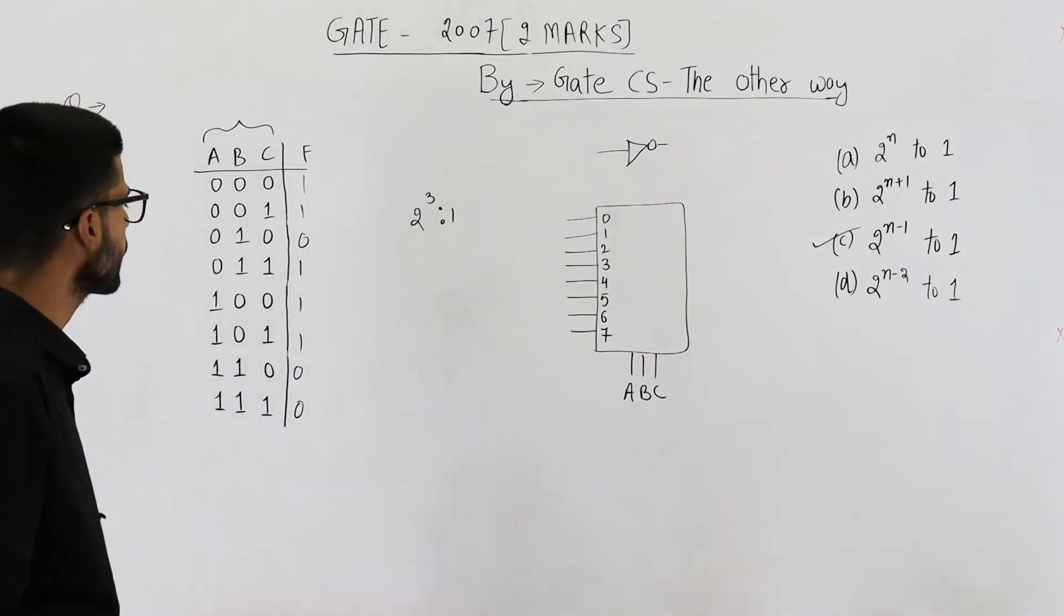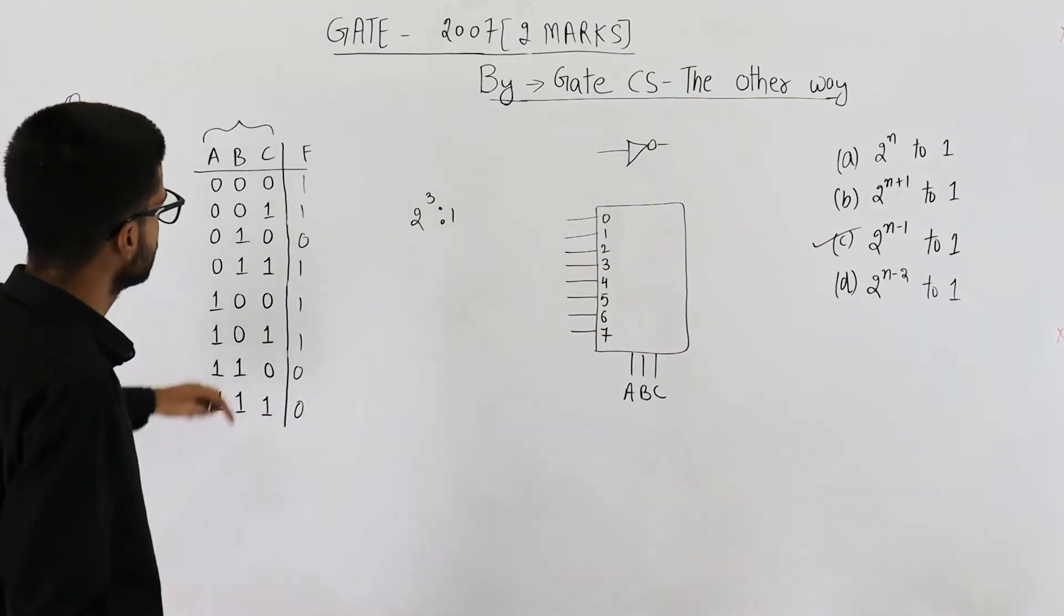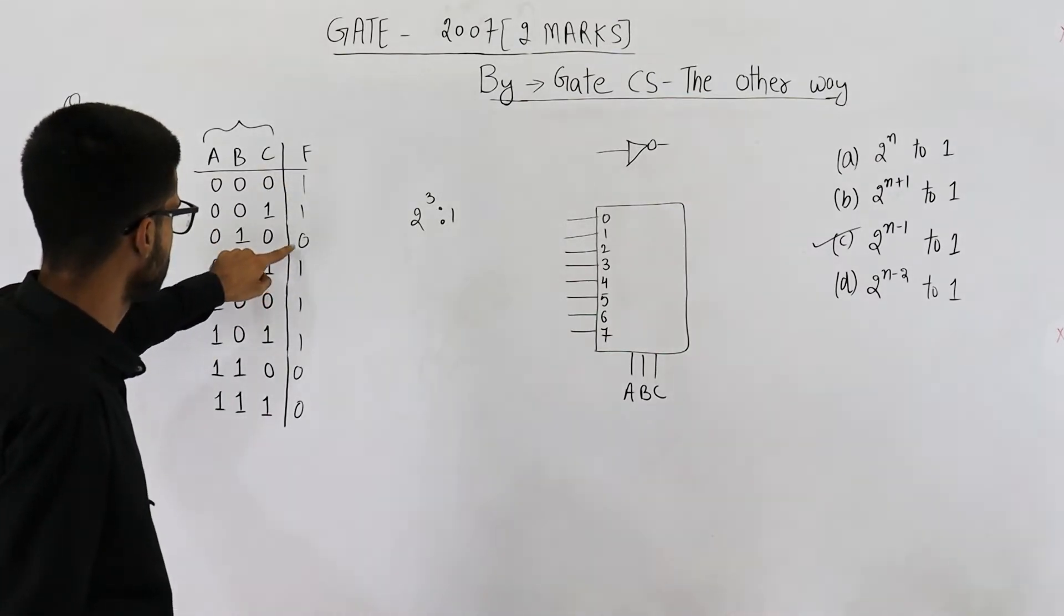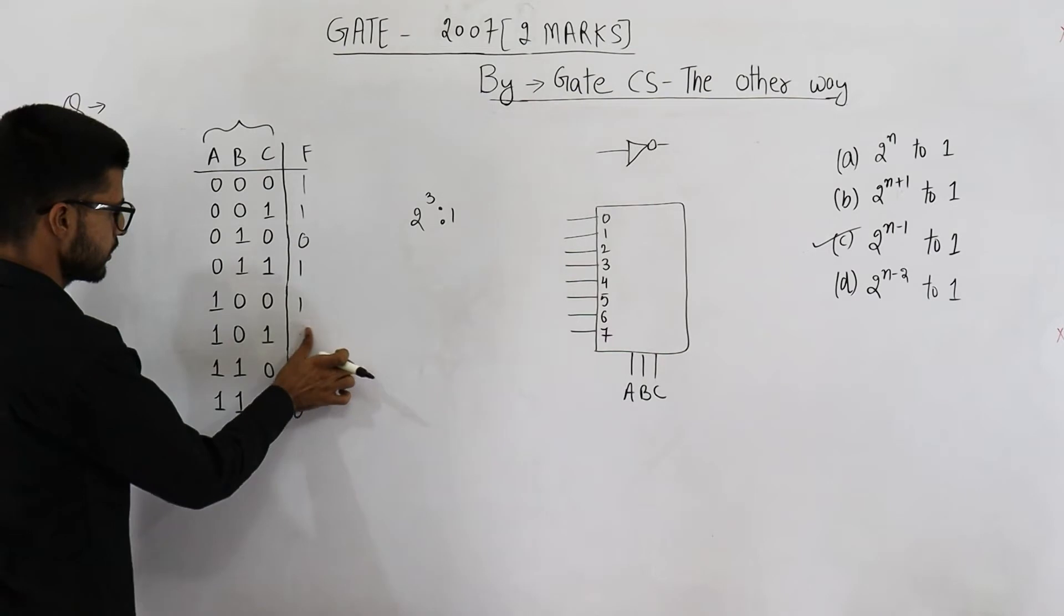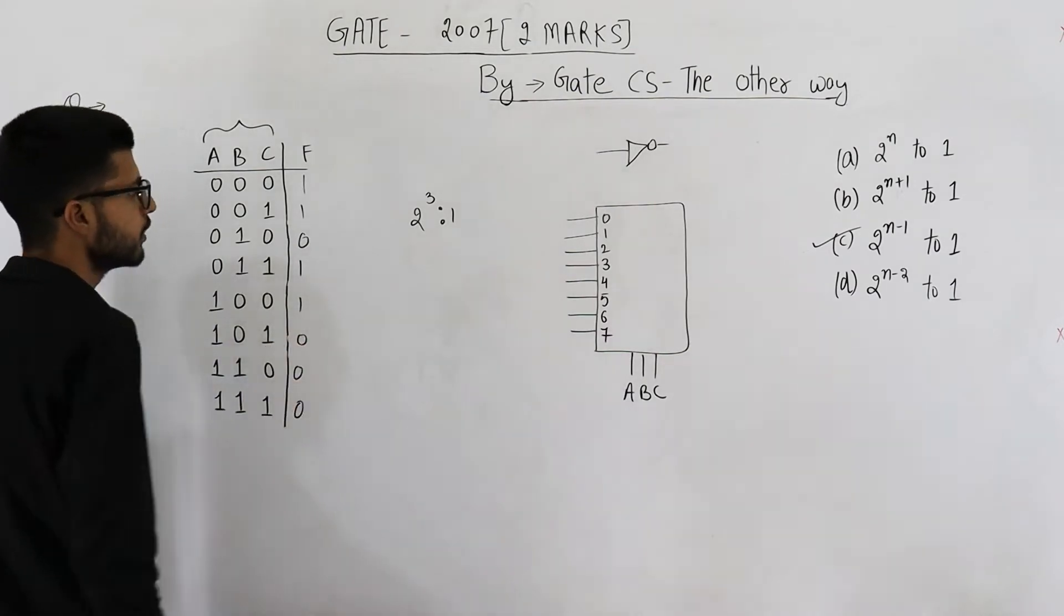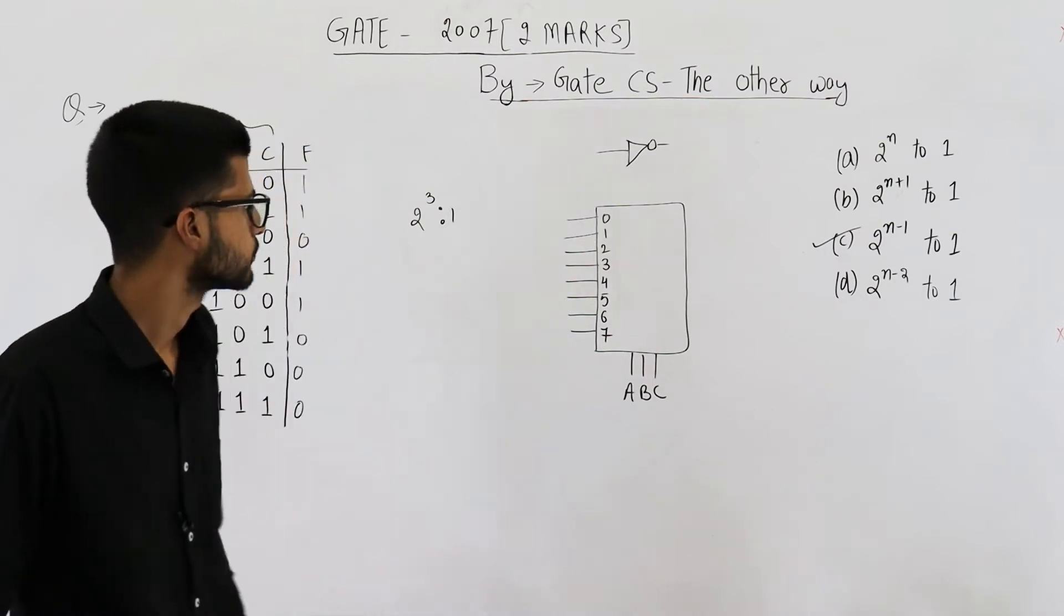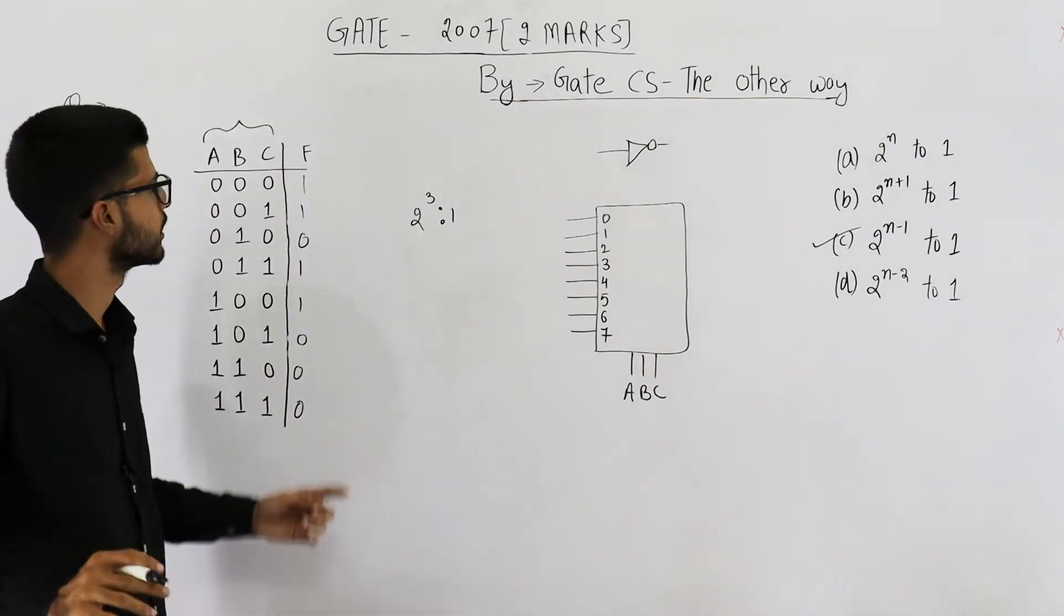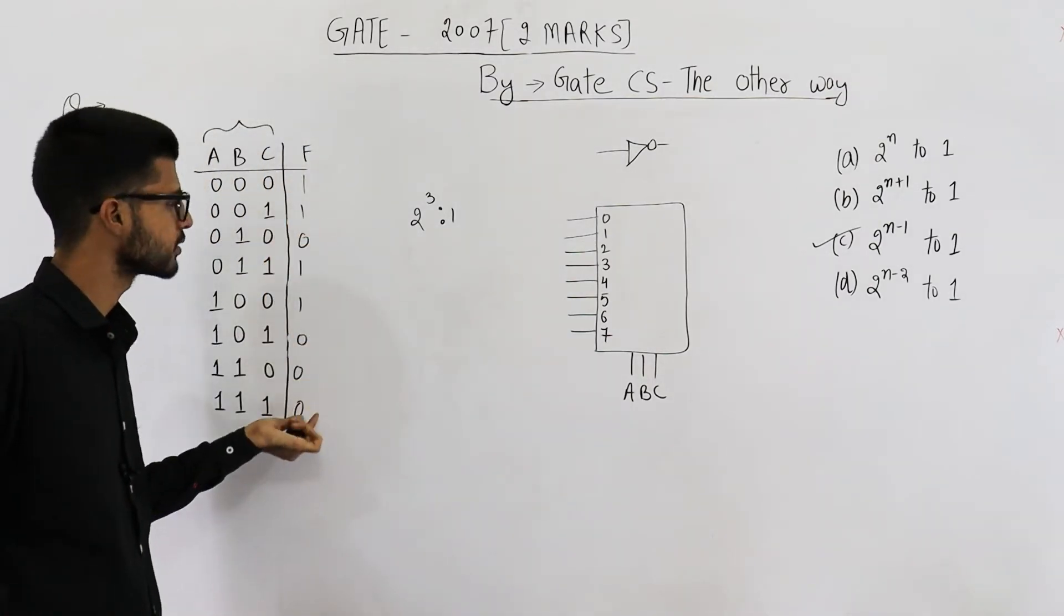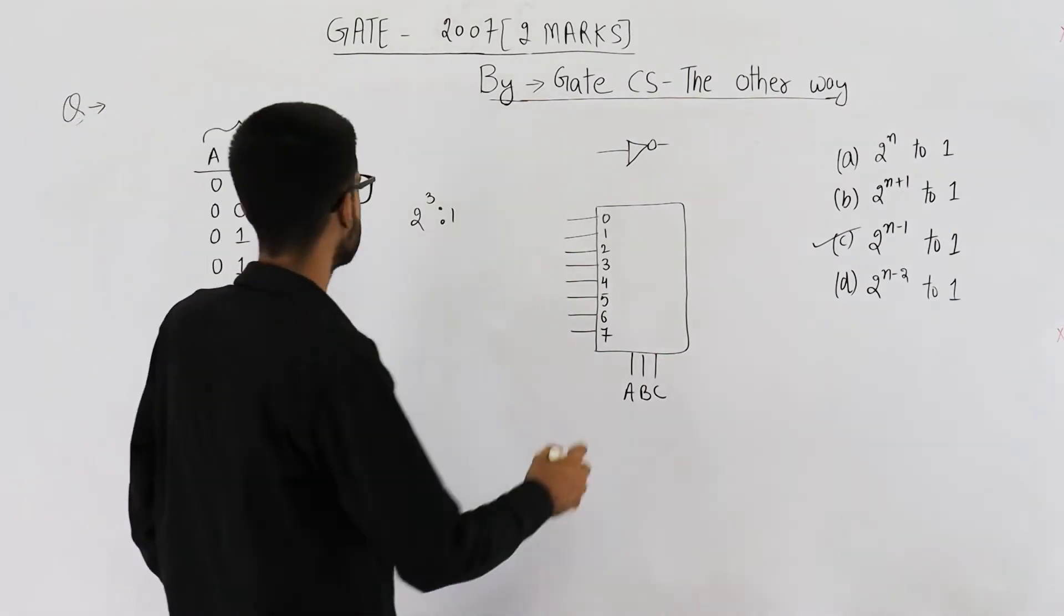I'm writing a function at random. It is one one zero one one one zero zero. Now you can see. Let us make it zero. You can see we want to implement it using this multiplexer. Nothing has to be done. Just copy these outputs as it is in input of the mux.